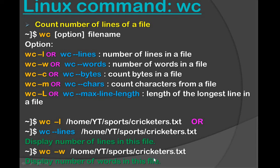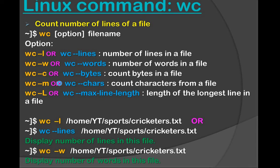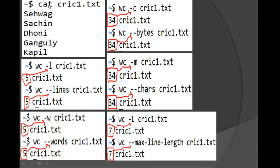We can see wc -w filename to display the number of words in the file. Now let's see some practical things — how these commands work. We first run cat crick1.txt and can see the content of this file on terminal. This file has five lines.